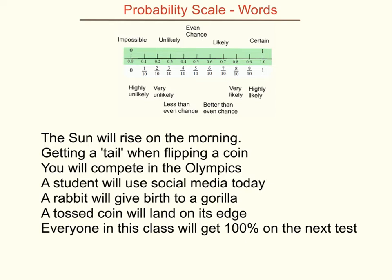Let's have a look at this set of events — the things that we're going to do — and see what the outcomes are. First of all, the sun will rise in the morning. The sun rises every morning, so I'm certain that's going to happen. Getting a tail when flipping a coin: on a coin there are two different things, a head and a tail, so I think that's an even chance — half the time I'll get heads, half the time I'll get tails.